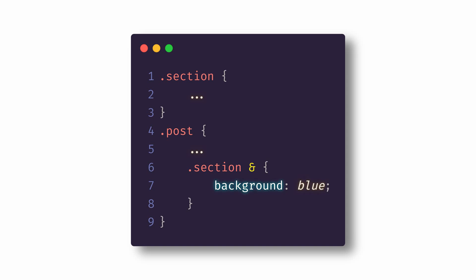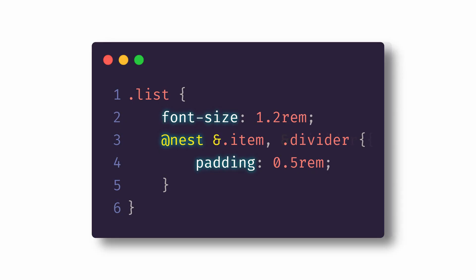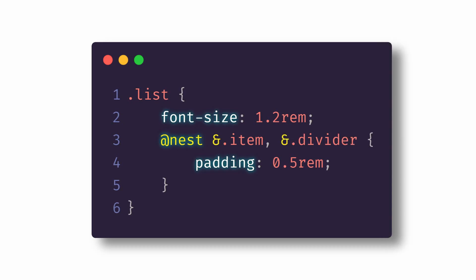There's another way to nest using the @nest rule. This rule allows you to get around some of the limitations of the ampersand nesting selector alone. For instance, what if you want to select a parent that is outside of the scoped nest? We can add @nest. The @nest rule allows us to do this — it only requires that a nesting selector be somewhere within the selection; it doesn't have to be at the beginning. But every selector must still have a nesting selector, so back to our list example, 'divider' would also have to have an ampersand.